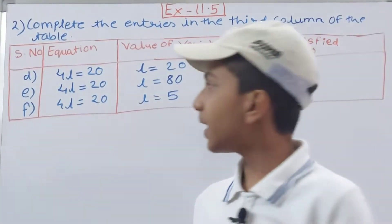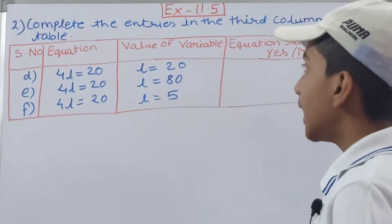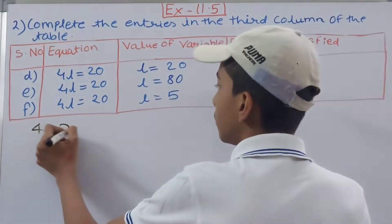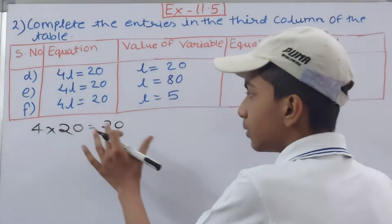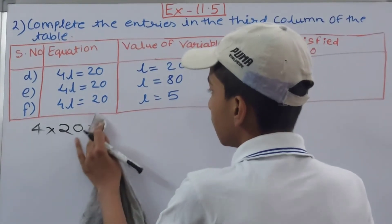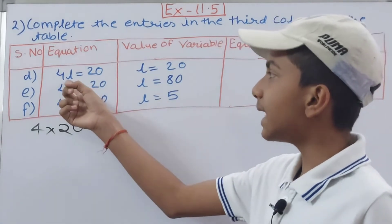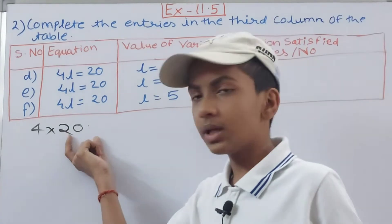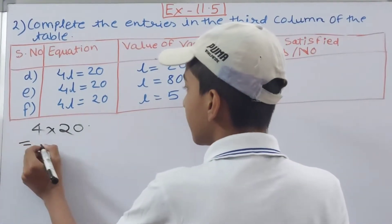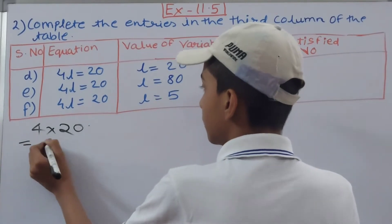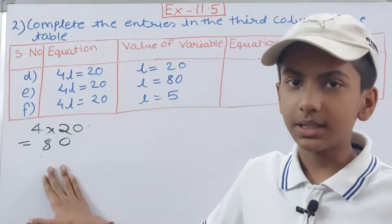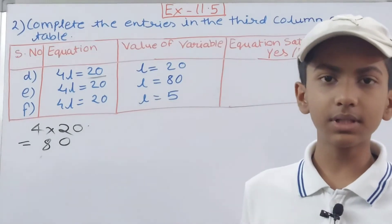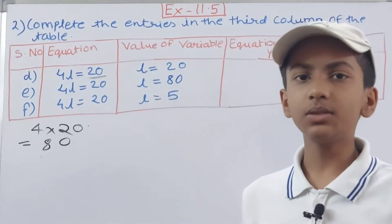Next part: equation is 4l = 20. First, value of l is 20. We replace l with 20: 4 × 20 = 80. The LHS is 80, but the RHS is 20. They are not equal, so the equation is not satisfied — write No.